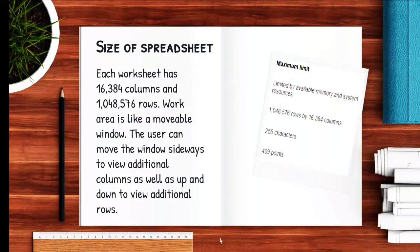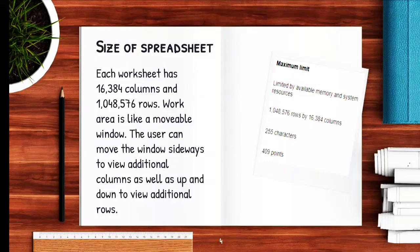The user can move the window sideways to view additional columns, as well as up and down to view additional rows. It means that we can scroll our mouse — scroll the wheel up or down, or right or left — to apply changes on the page in multiple directions and to perform various operations.